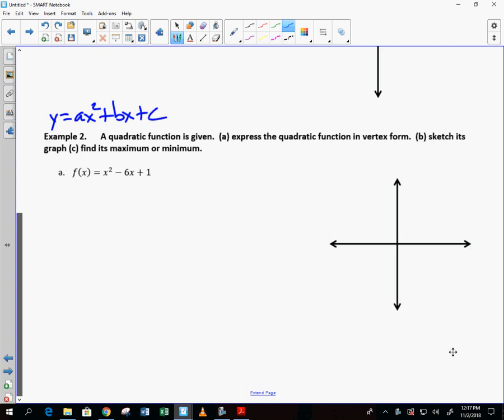Do you remember yesterday what you did to find the vertex of a parabola in that form? Negative b divided by 2a. Once you got negative b divided by 2a, how did you find the y value? You plugged it in, right? And that gave you the vertex.